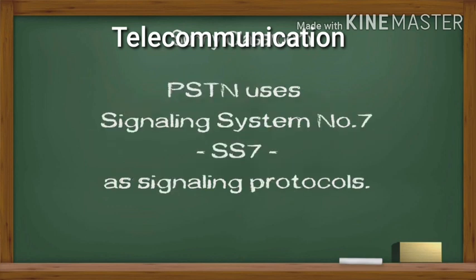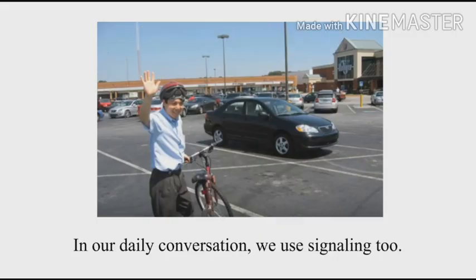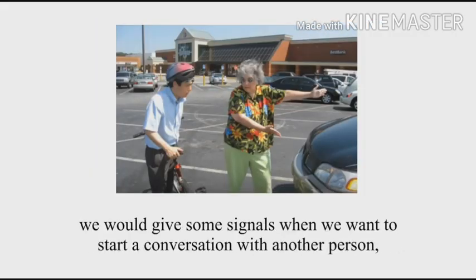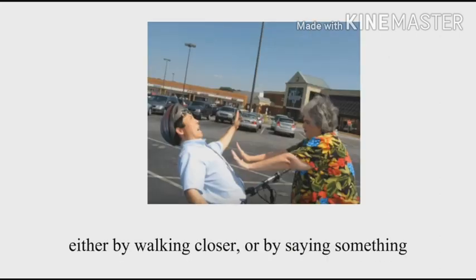PSTN uses Signaling System Number 7, SS7, as its signaling protocol. In telecommunication, signaling is the use of signals for controlling communication. In our daily conversation, we use signaling too. For example, we give some signals when we want to start a conversation with another person, either by walking closer or by saying something.